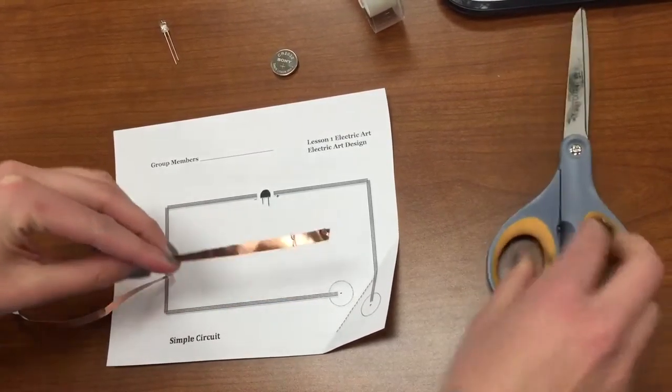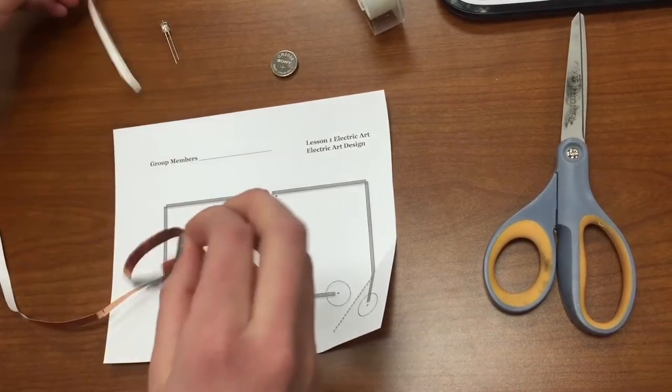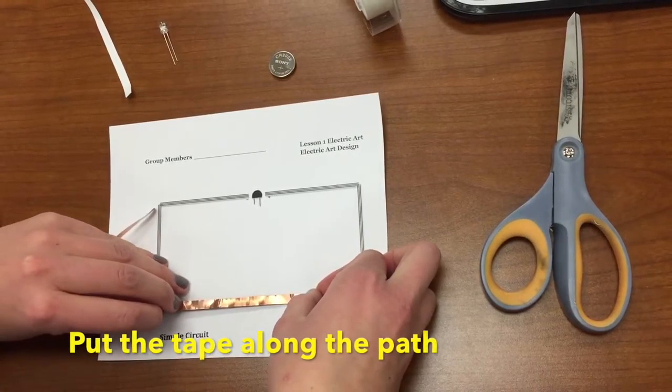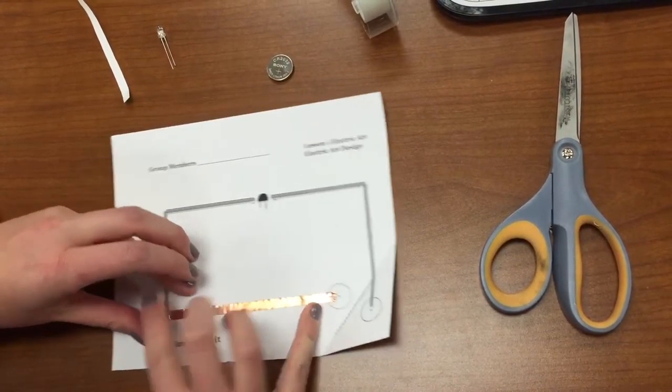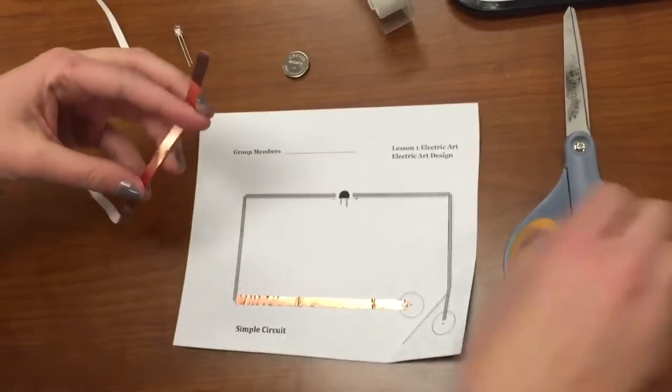So you cut the copper, peel the tape off of it, and then you just put it along the path. Now I'm going to do that for the whole path of the paper circuit.